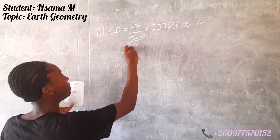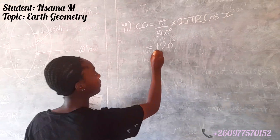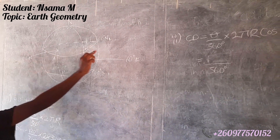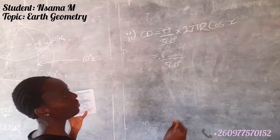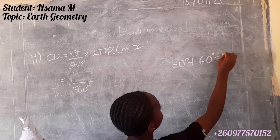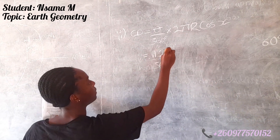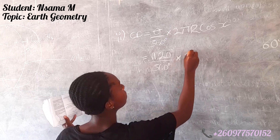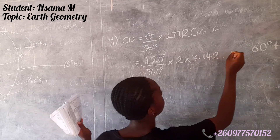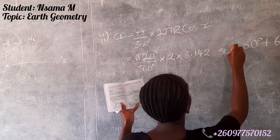We're going to write: 120 — we still get the 120 from here — over 360. Our angle is 60 degrees west and 60 degrees east, so 60 degrees plus 60 degrees equals 120 degrees. Times 2, times 3.142, times 37.